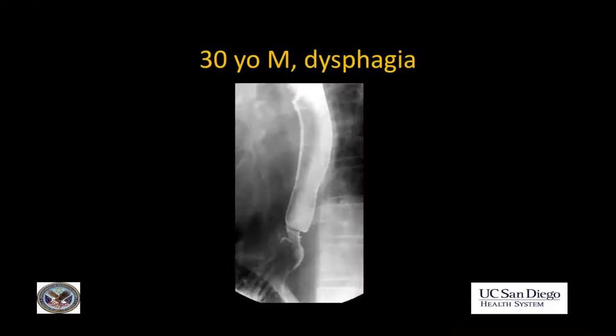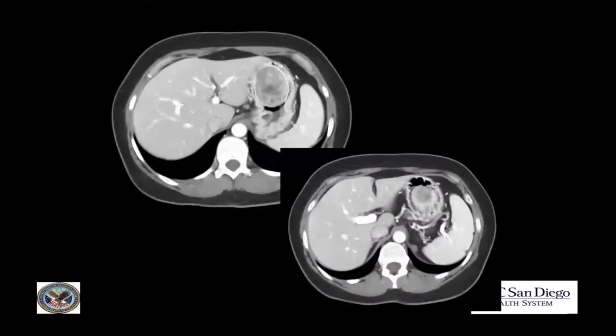Another case is a young male with history of dysphagia who has these ring-like narrowings in the lower esophagus. What do you think of this mass in the stomach? And lastly, what do you think of this grape-like mass in the distal stomach slash first part of the duodenum?